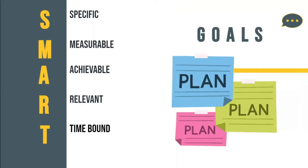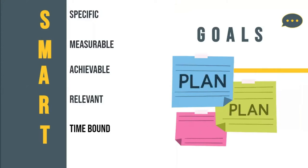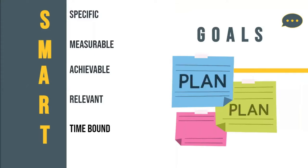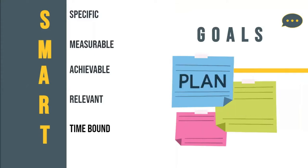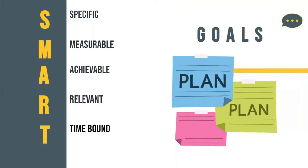SMART stands for specific, measurable, achievable, relevant, and time bound. I will break down each meaning. You want to make specific goals, because knowing exactly what you want creates a clear vision when setting out to accomplish anything.